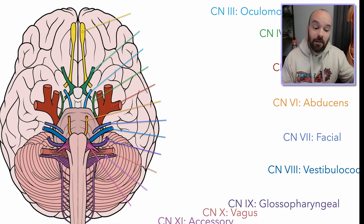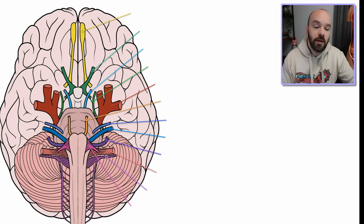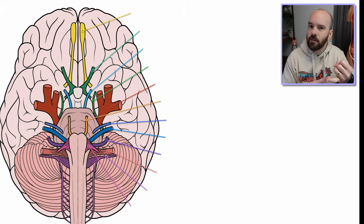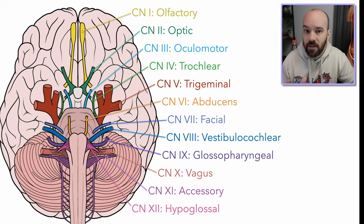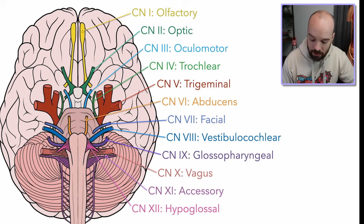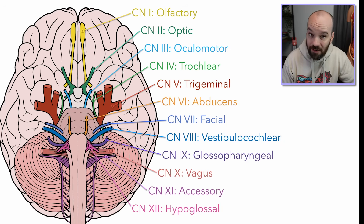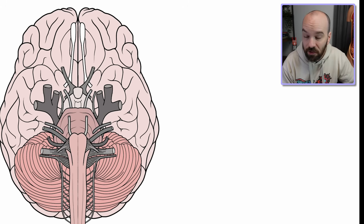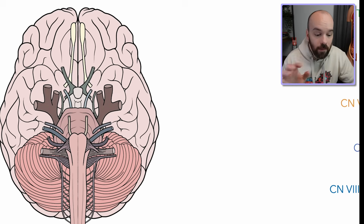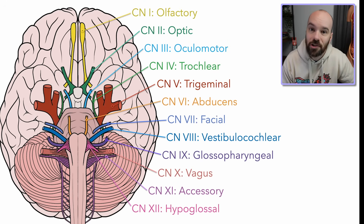Here's a blank diagram. Take a moment, pause the video, and see if you can go through and identify each of the cranial nerves we learned, whether they're sensory, motor, or mixed, and what they actually do. Here are the names of those nerves so you can check how you did. Here's something a little bit tougher — I'm going to take away the lines as well as the color coding. Pause the video now and see if you can identify all 12 cranial nerves as well as what they do. And here are the answers back so you can check.